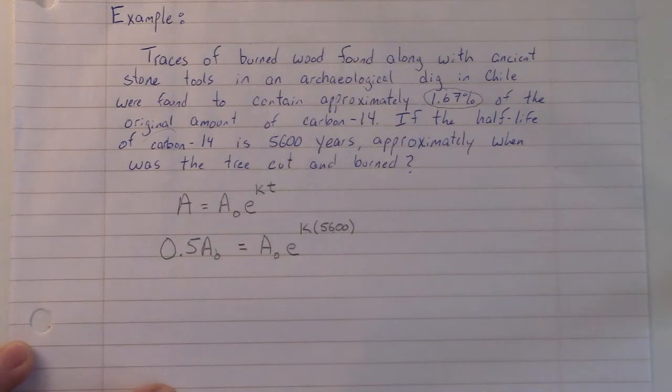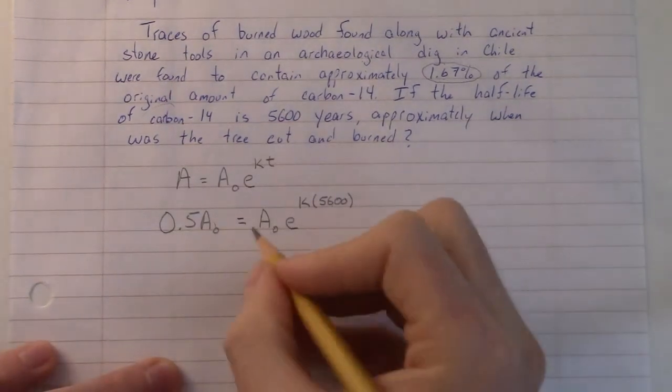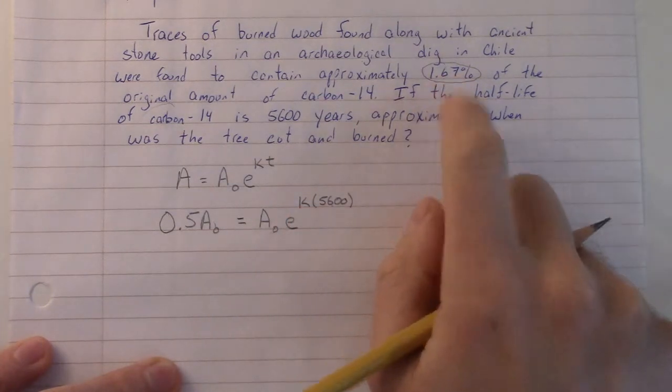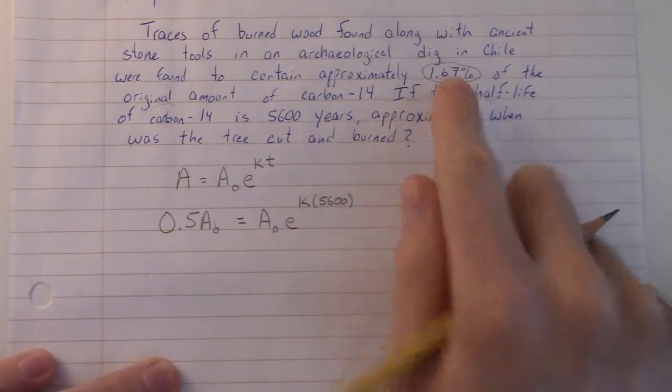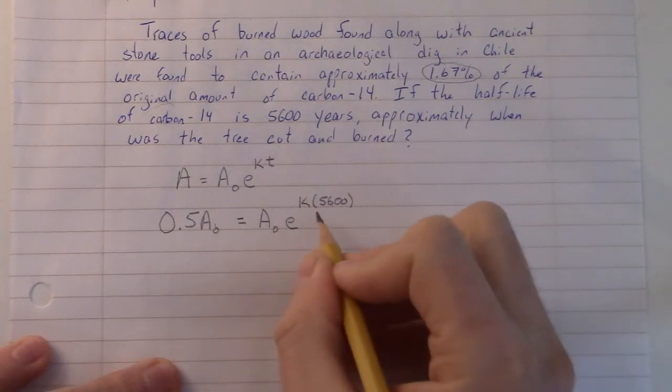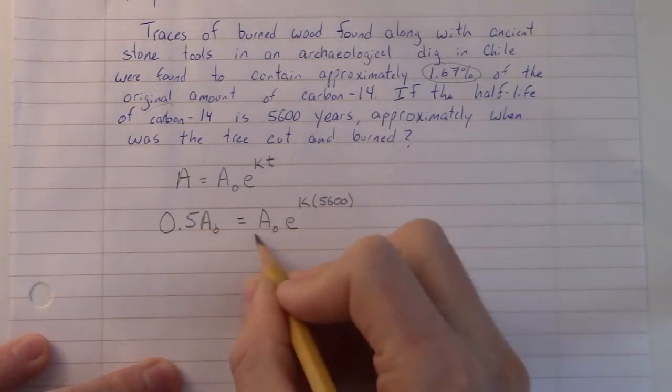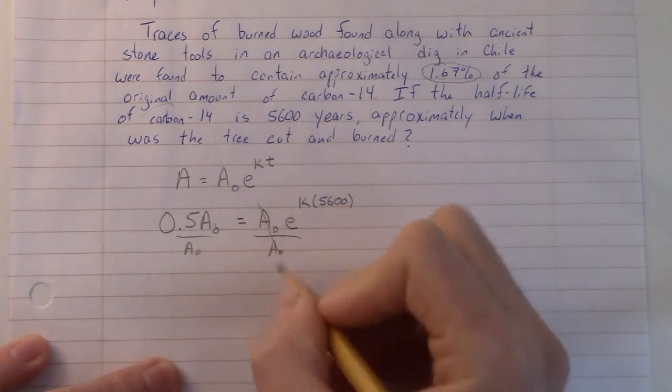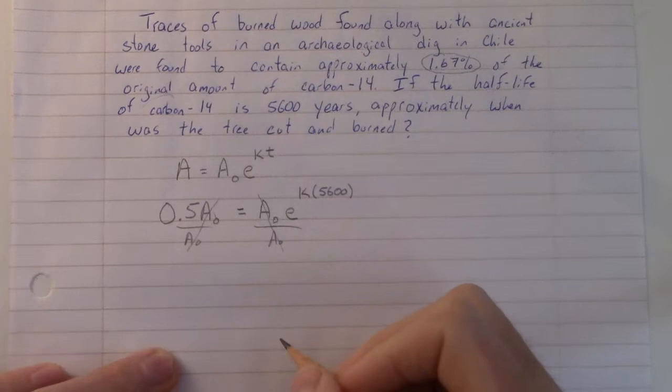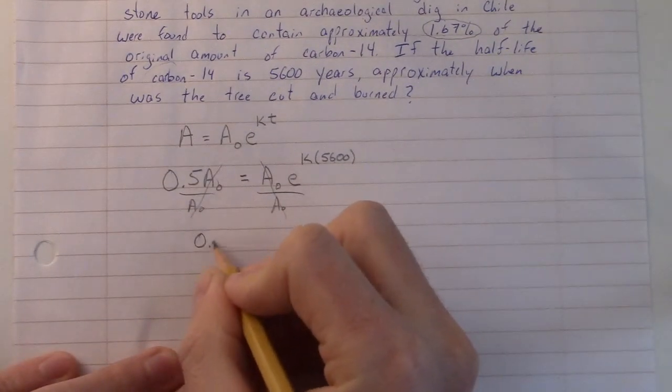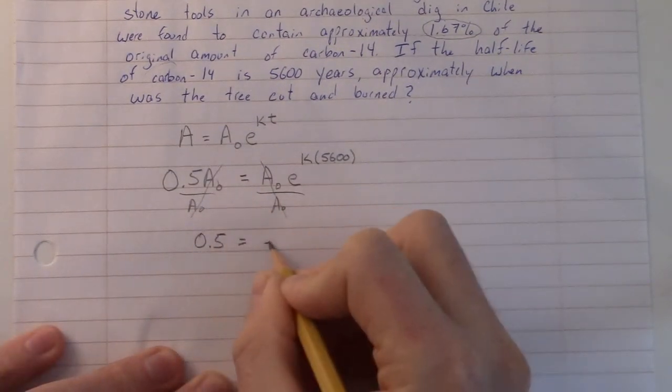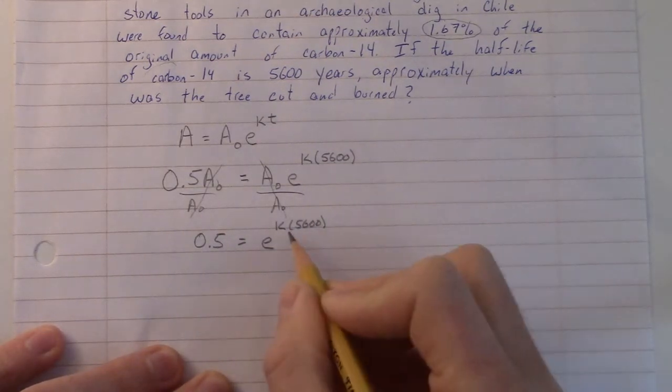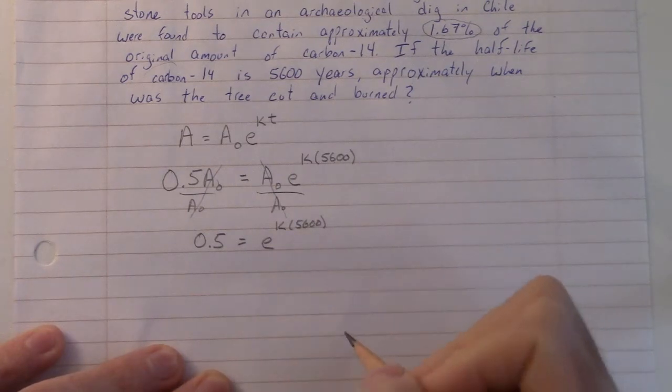I don't know k, right? So I'm going to try to find k, and then I'm going to use that to go back and figure out when it was burned. And I'm going to also use the percentage up here. So to find k, I need to get rid of A₀. So, since it's on both sides, I can just divide by A₀, the initial amount. Those immediately cancel. And then I have 0.5 = e^(k×5600). If you prefer to write 5,600k, that's fine.